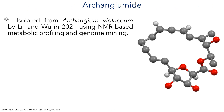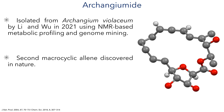Archanguamide was first isolated in 2021 from Archangium violaceum by Lian Wu, who discovered it using NMR-based metabolic profiling and genome mining. It has quite an atypical structure and is the first alenic macrolide ever to be discovered and only the second macrocyclic alene to ever be observed in nature.